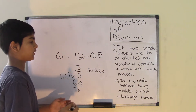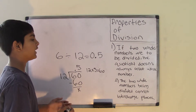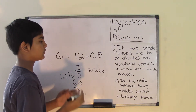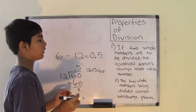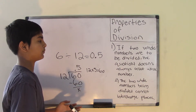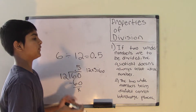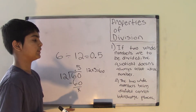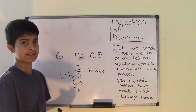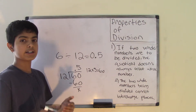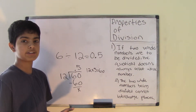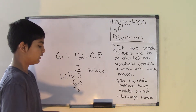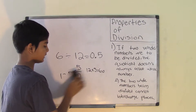So 0.5 is our quotient, but the number 0.5 has a decimal point, so it's not a whole number — it's a decimal number. This confirms our first property: dividing two whole numbers doesn't always result in a whole number. You can get a whole number as a quotient, but sometimes you'll get something else.